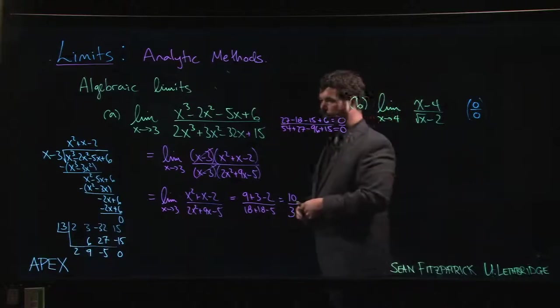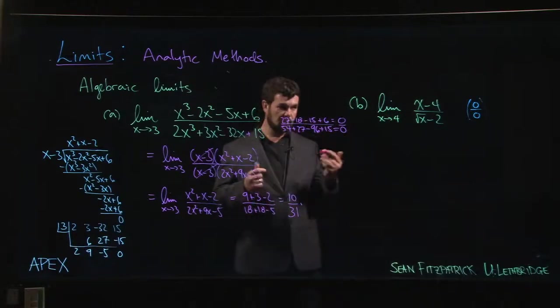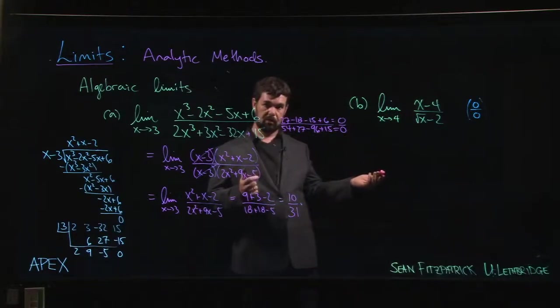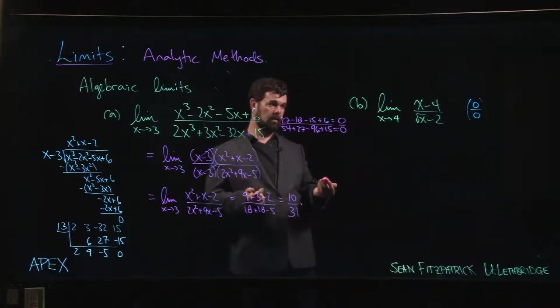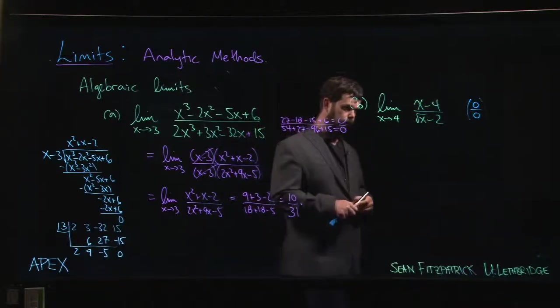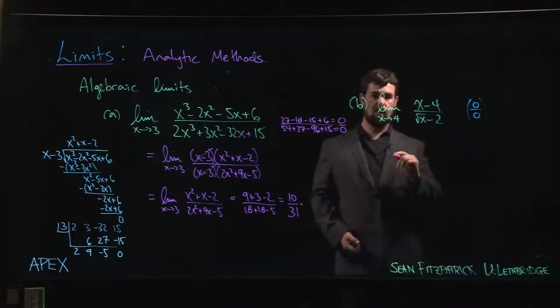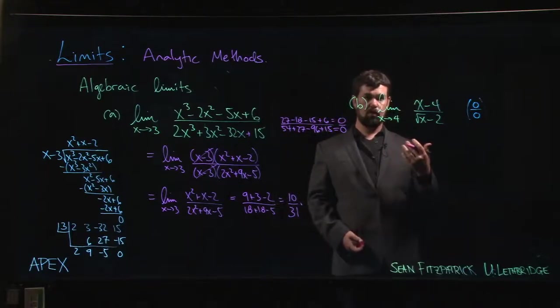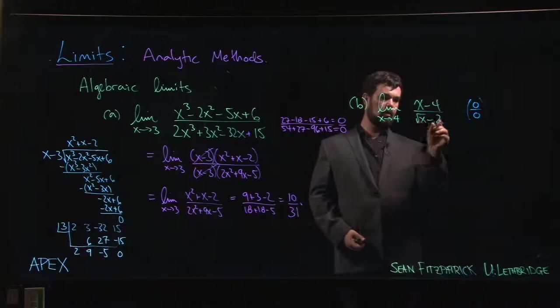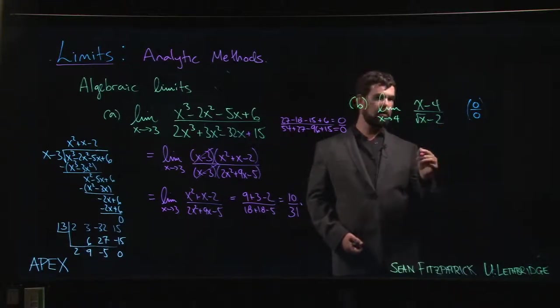So because we have this 0 over 0 form, we ask whether or not we can do some sort of work to simplify and determine an answer. One of the things that works when you have radicals is you can look to rationalize. So when you're trying to get rid of a radical in the denominator like this, you can try multiplying by the conjugate.